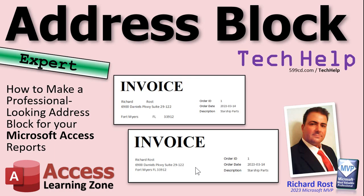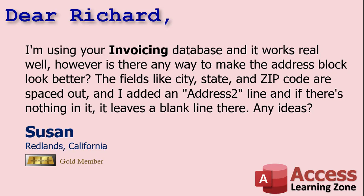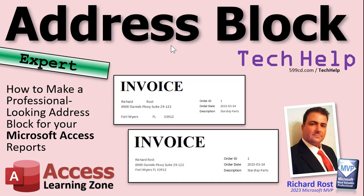Today's question comes from Susan in Redlands, California, one of my gold members. Susan says: I'm using your invoicing database and it works really well. However, is there any way to make the address block look better? The fields like city, state, and zip code are spaced out, and I added an address 2 line and if there's nothing in it, it leaves a blank line. Any ideas?